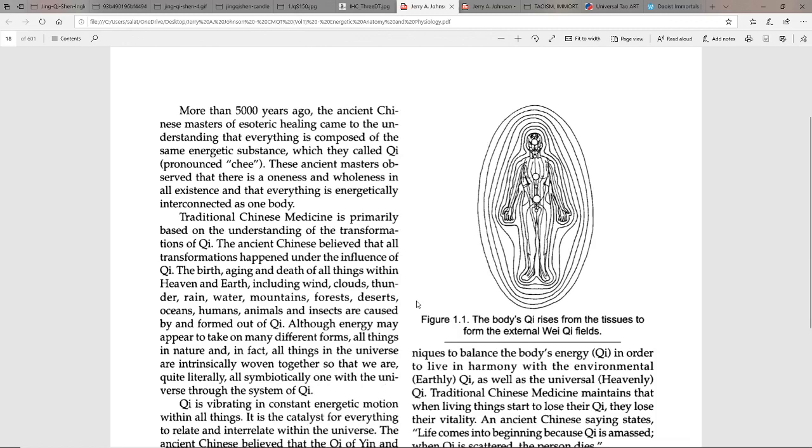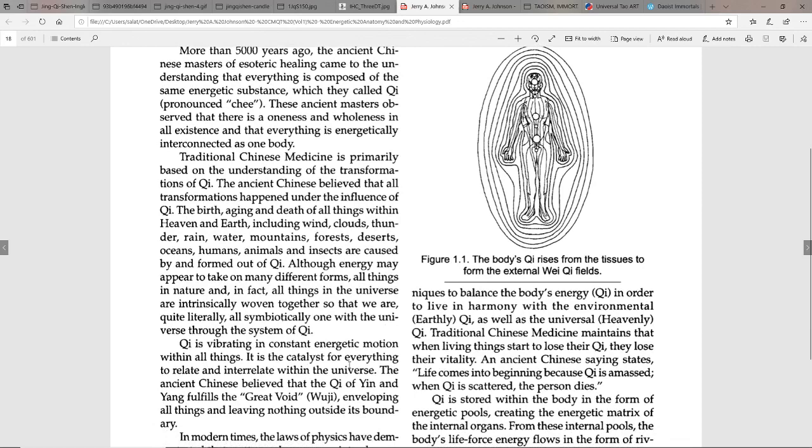Water, mountains, forests, deserts, oceans, humans, animals, and insects are all caused by and formed out of qi. Although energy may appear to take on many different forms, all things in nature and in fact all things in the universe are intrinsically woven together, so that we are quite literally all symbiotically one with the universe through the system of qi.